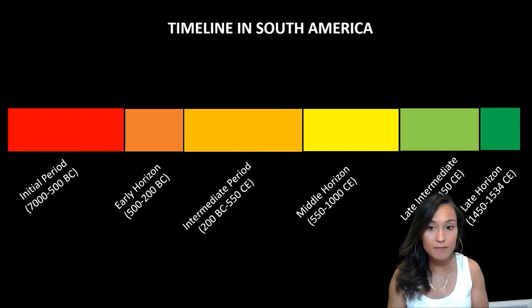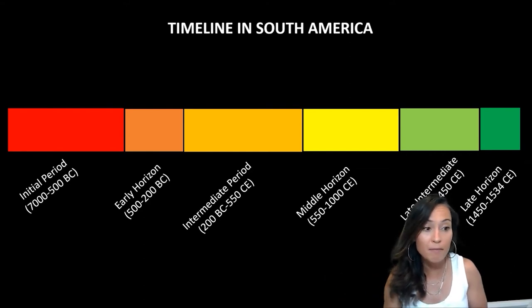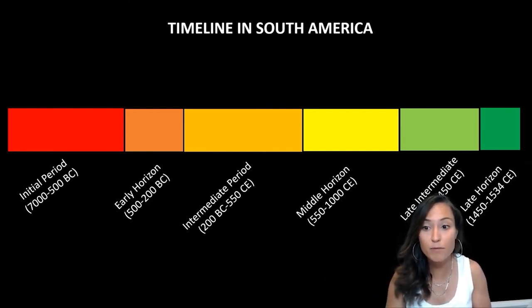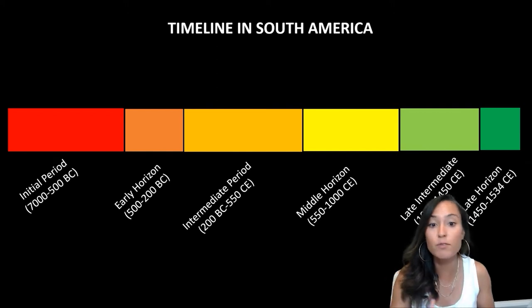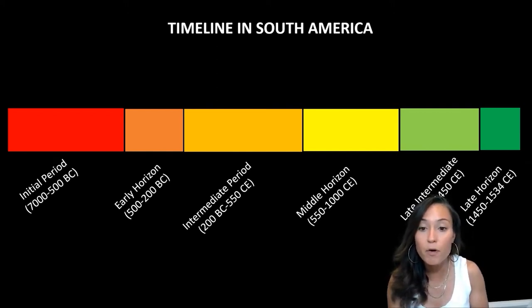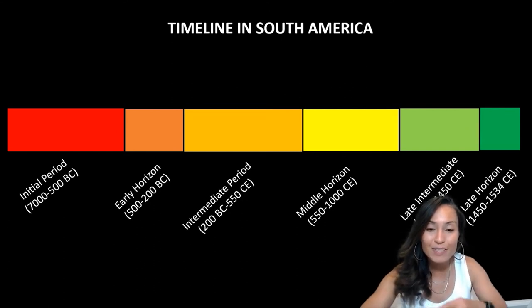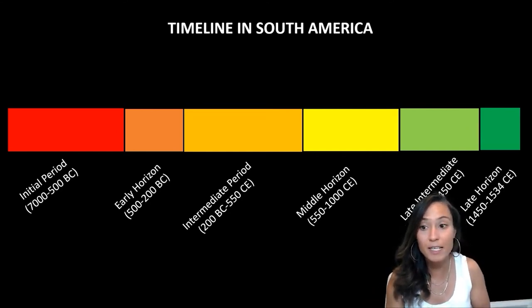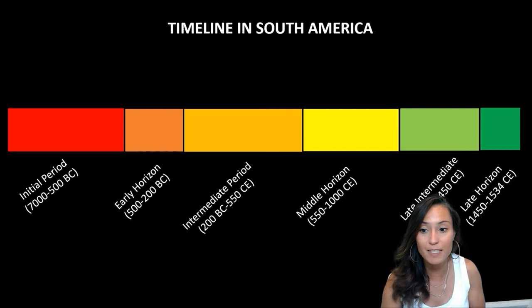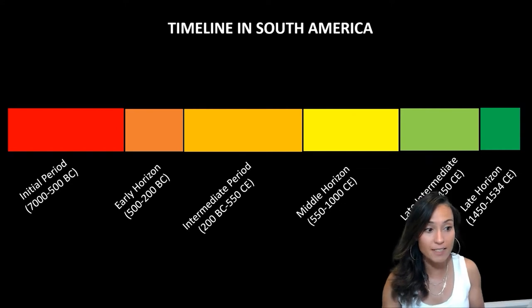Archaeologists have typically divided Peruvian and Andean history more broadly into a series of developmental periods, beginning with the initial period in which we see the development of ceramics and agricultural production. We then move through time as settlements become larger, more hierarchical, and develop more sophisticated types of architecture and material culture. This kind of developmental sequence concludes in what's called the Late Horizon, dating from roughly 1450 to 1550 AD, during which we see the emergence and fluorescence of the Incan Empire.